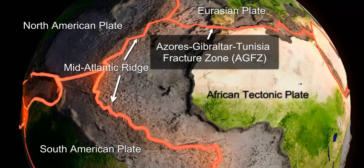The Mid-Atlantic Ridge is the main area of divergent plate boundary, separating the North American and South American plates from the Eurasian and African plates, and causing the Atlantic Ocean to form over millions of years. This is pushing the African plate and Eurasian plate eastward. However, there is compression and convergence between the African plate and the Eurasian plate, which is causing energy to build up. There have been previous, very large earthquakes in this area.